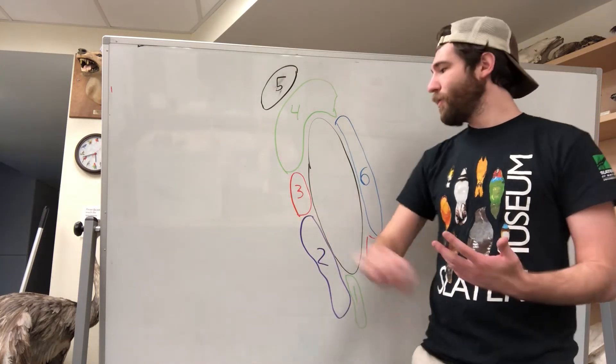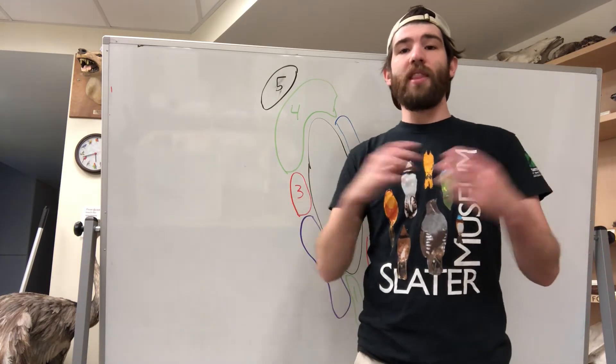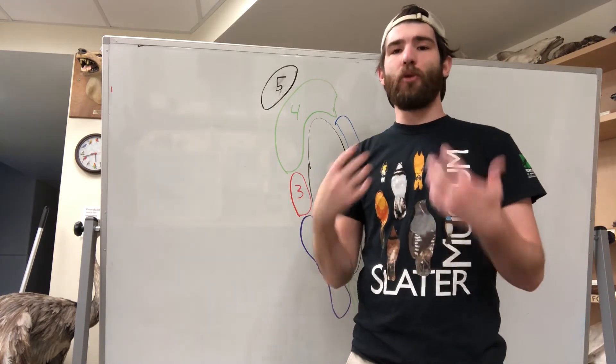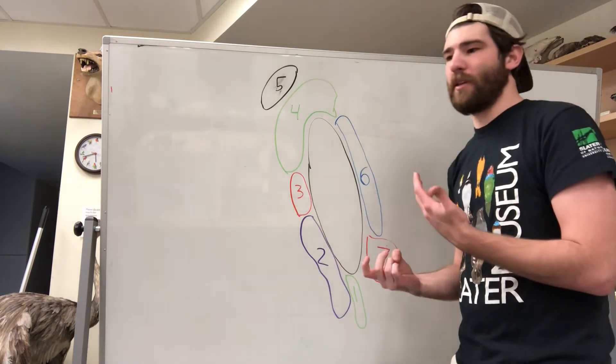Interbreeding means that the animals within that group, in this case our salamanders, when they breed, their babies are born healthy and their babies have a chance of growing up and having their own babies.